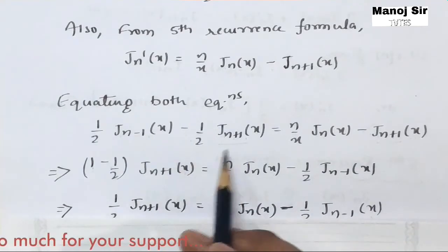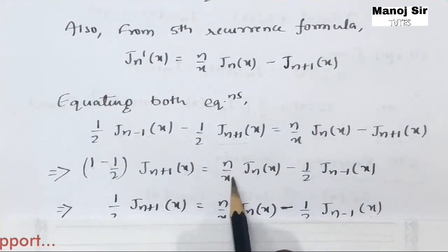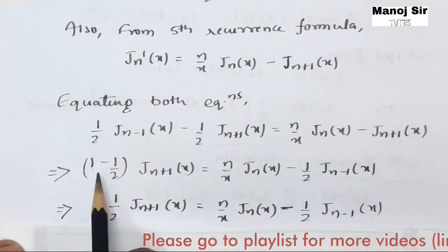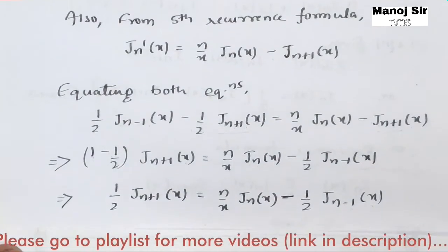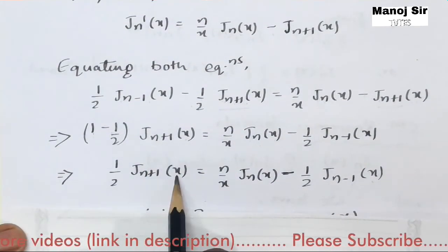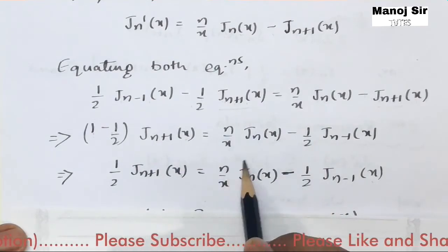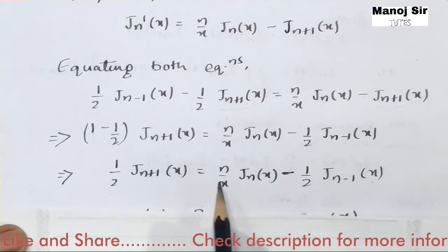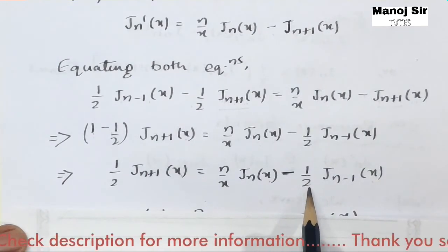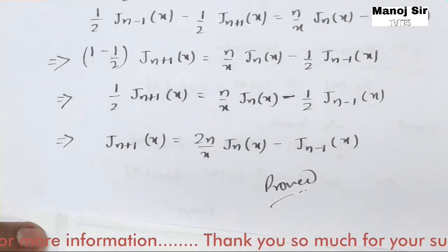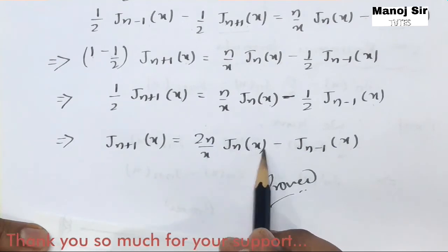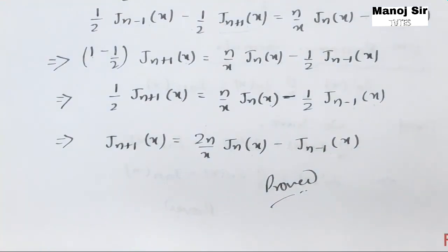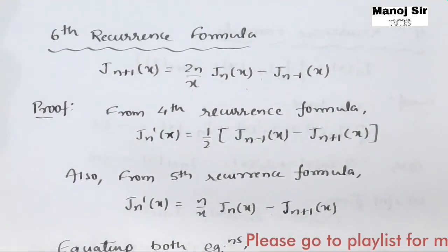So one minus half of jn+1(x) equals n upon x times jn(x). Taking jn-1(x) to the right-hand side gives minus half of jn-1(x). One minus half gives half of jn+1(x) equals n upon x times jn(x) minus half of jn-1(x). Multiplying through by 2, the halves cancel, giving: jn+1(x) equals 2n upon x times jn(x) minus jn-1(x). This is the sixth recurrence formula — hence proved. Thank you so much.